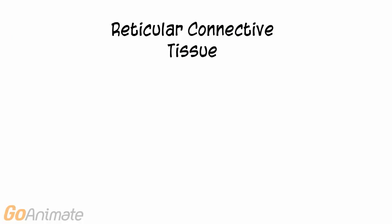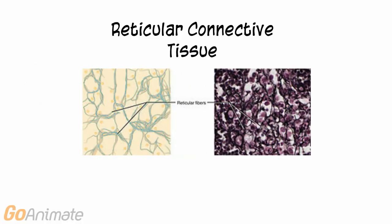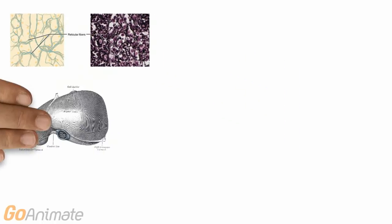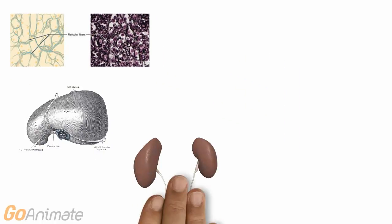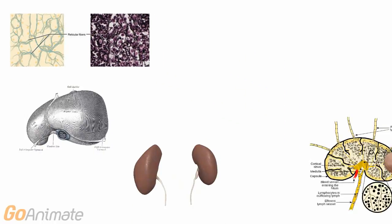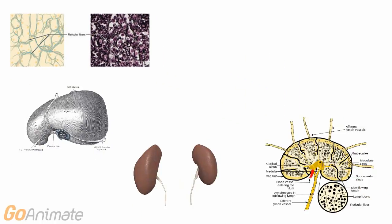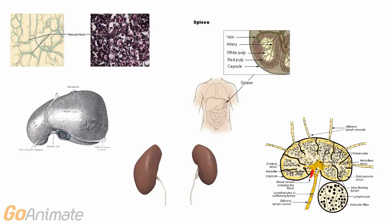Reticular connective tissue contains small branching fibers. Reticular connective tissue is found in the liver, kidneys, lymph nodes, and spleen.